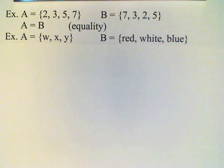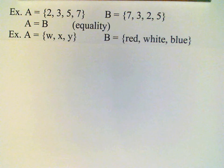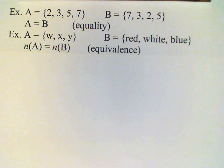Next example, we have A consisting of the elements W, X, Y and B consisting of the elements red, white, and blue. These sets are obviously not equal, but they each have three elements, their cardinal numbers are equal, and therefore we say that these sets are equivalent.